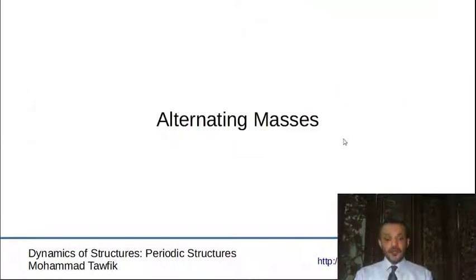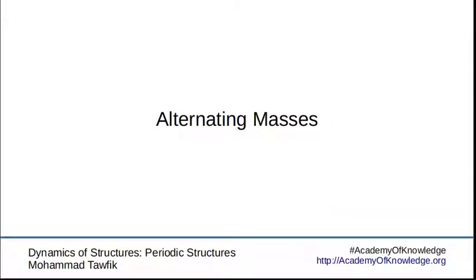What we're going to do in the next video is change what we already have here from the identical masses to non-identical masses. So we will have alternating values of the masses. The alternating values will create, again, a periodic structure. Maybe the cell will look different, but we're still having a periodic structure.